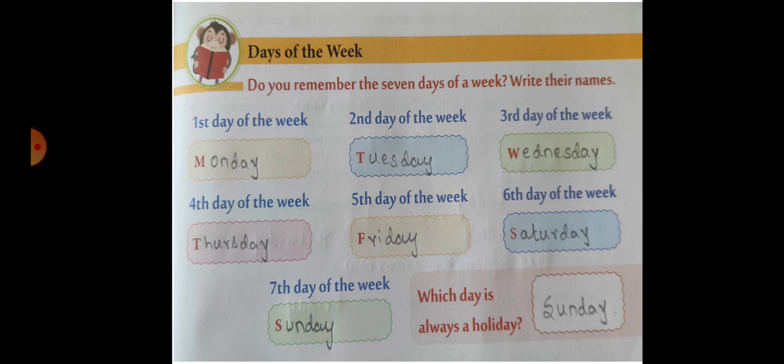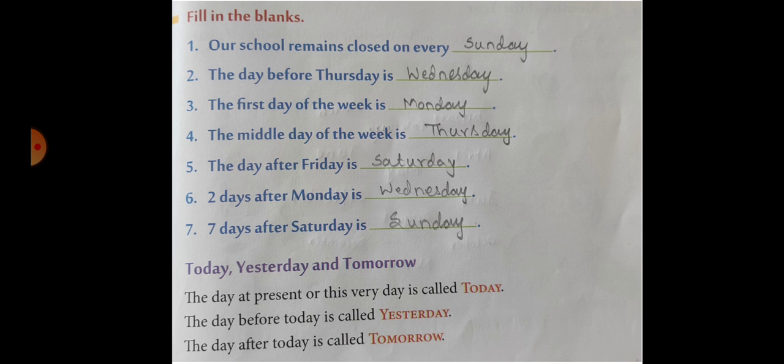First day Monday, second day of the week is Tuesday, third day of the week is Wednesday, fourth day Thursday, fifth day is Friday, sixth day is Saturday, and seventh day is Sunday. Which day is always a holiday? That is Sunday. Now our school remains closed on every Sunday. The day before Thursday is Wednesday.